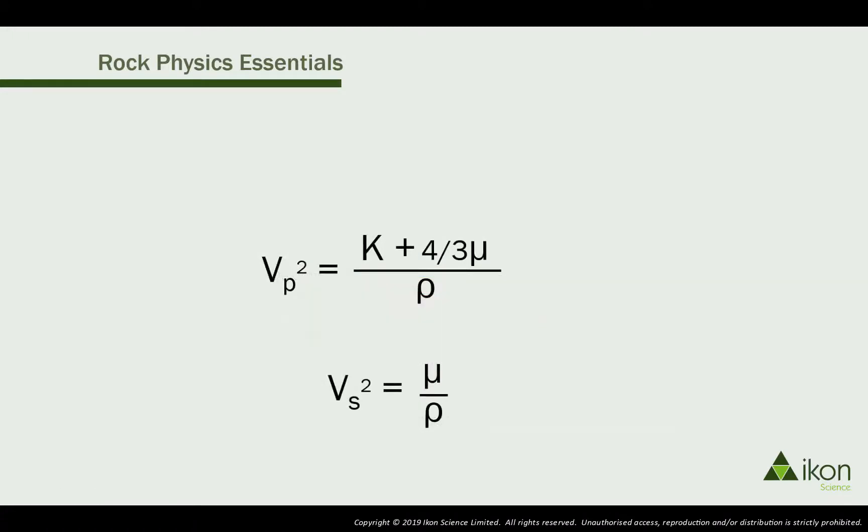It's also simple to express VP and VS in terms of elastic moduli. Here we can see that VP squared is equal to the bulk modulus plus four-thirds of the shear modulus divided by the density.